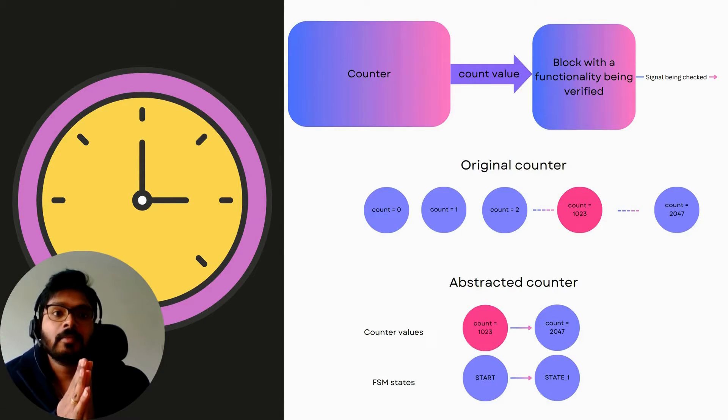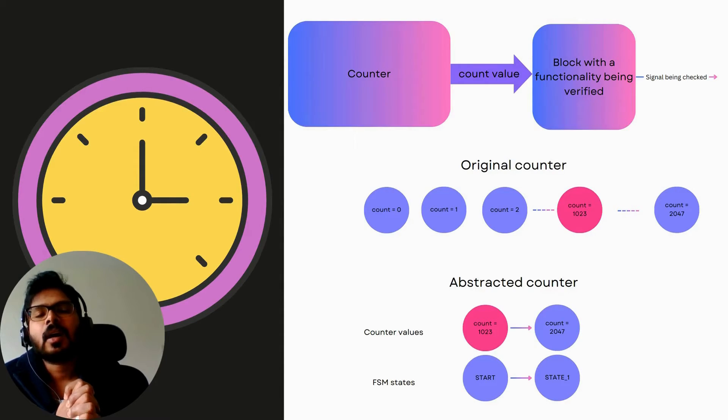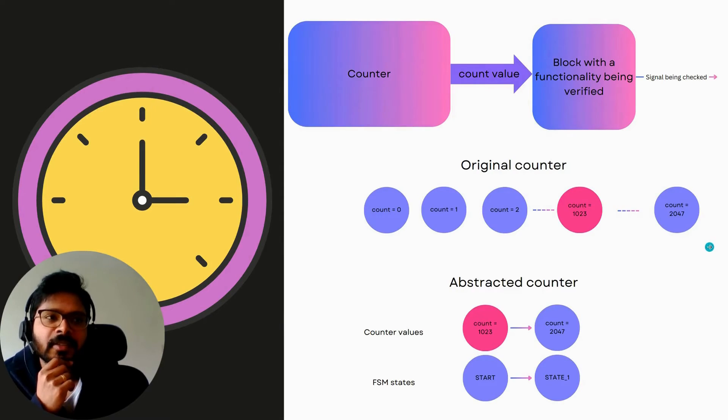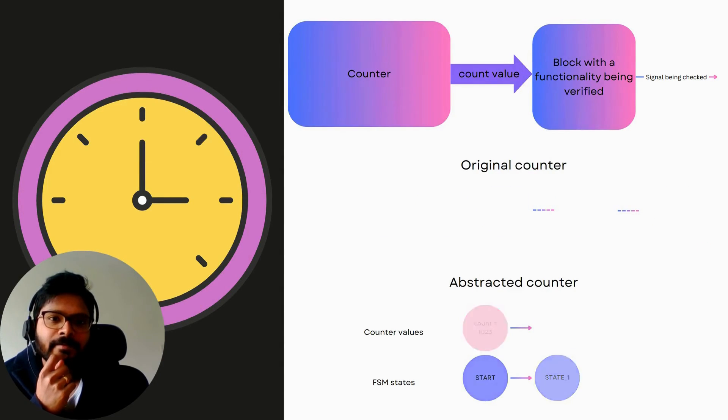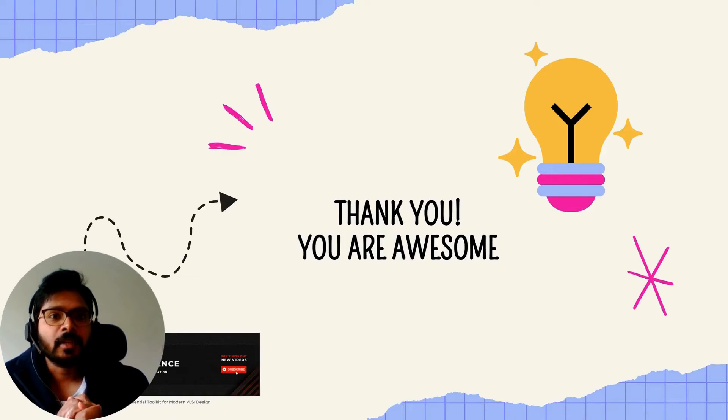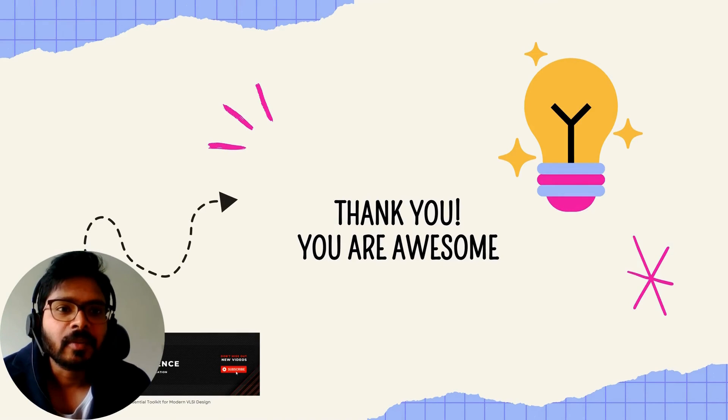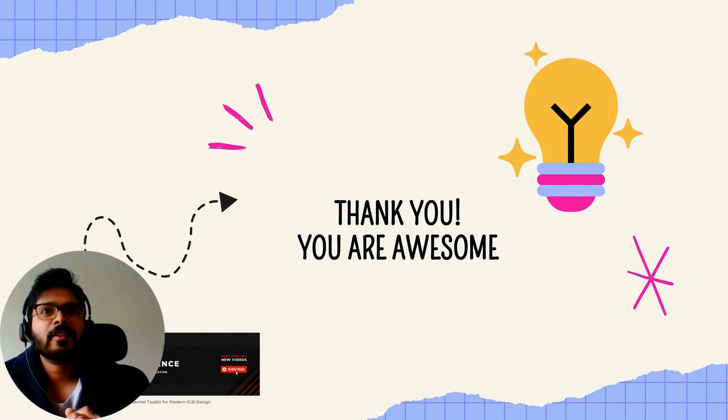So do you see any big counters in your designs? Why not abstract them and see how much speed you are getting in proving the properties or getting to interesting counter examples? I hope you get counter examples more than proofs and find some interesting bugs. I'm really excited to know how it went. Let me know. Thanks a lot again for watching. Make sure you subscribe to our channel and never miss an update on formal. Stay tuned for the next video where we'll cover another interesting formal verification topic. See you next time. Bye.